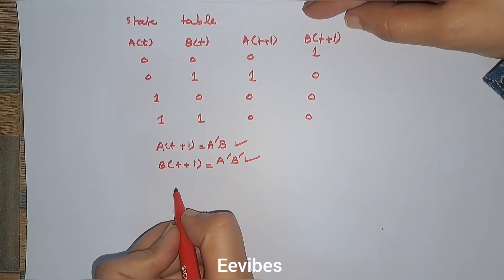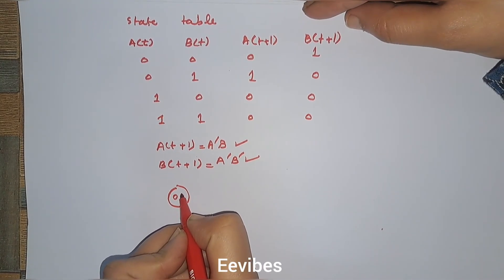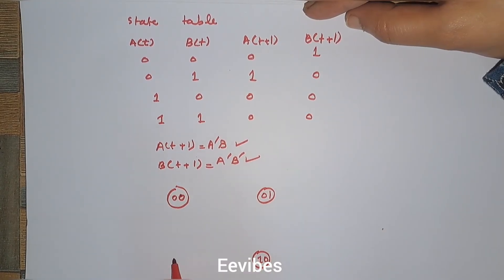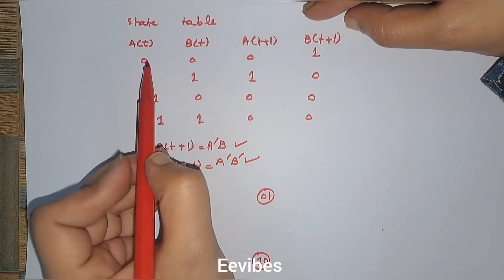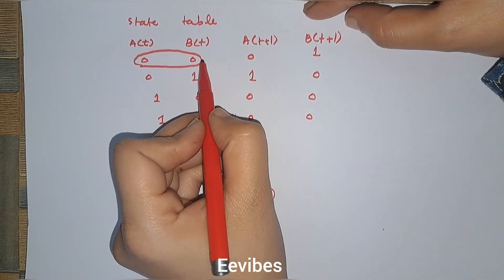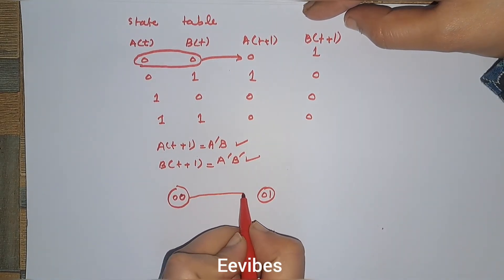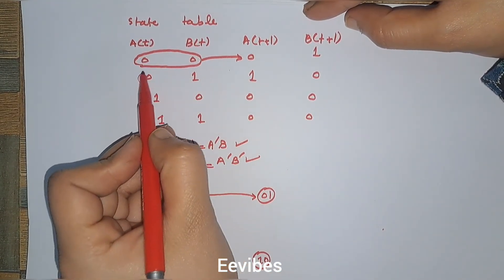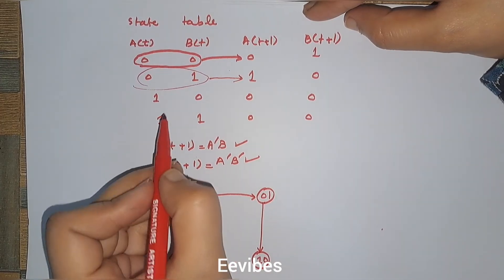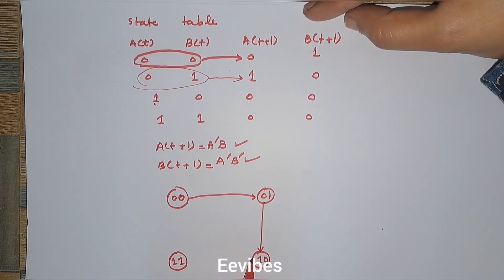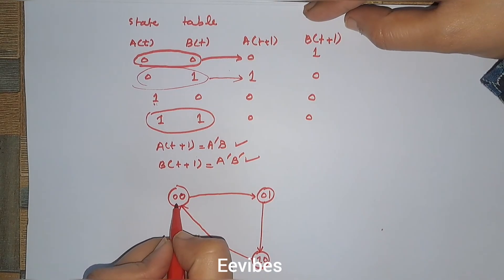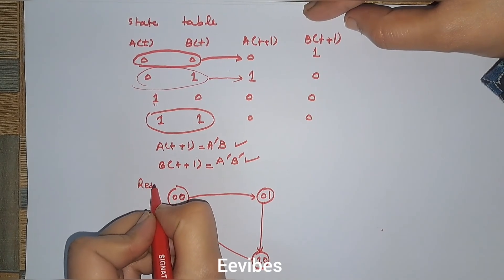There are four states: 00, 01, 10, and 11. From the state table: when at state 00 you go to 01, so I draw an arrow from 00 to 01. When at state 01 you go to 10, so an arrow from 01 to 10. When at state 10 you move to 00. When at state 11 you also move to 00. So state 00 can be called the reset state.